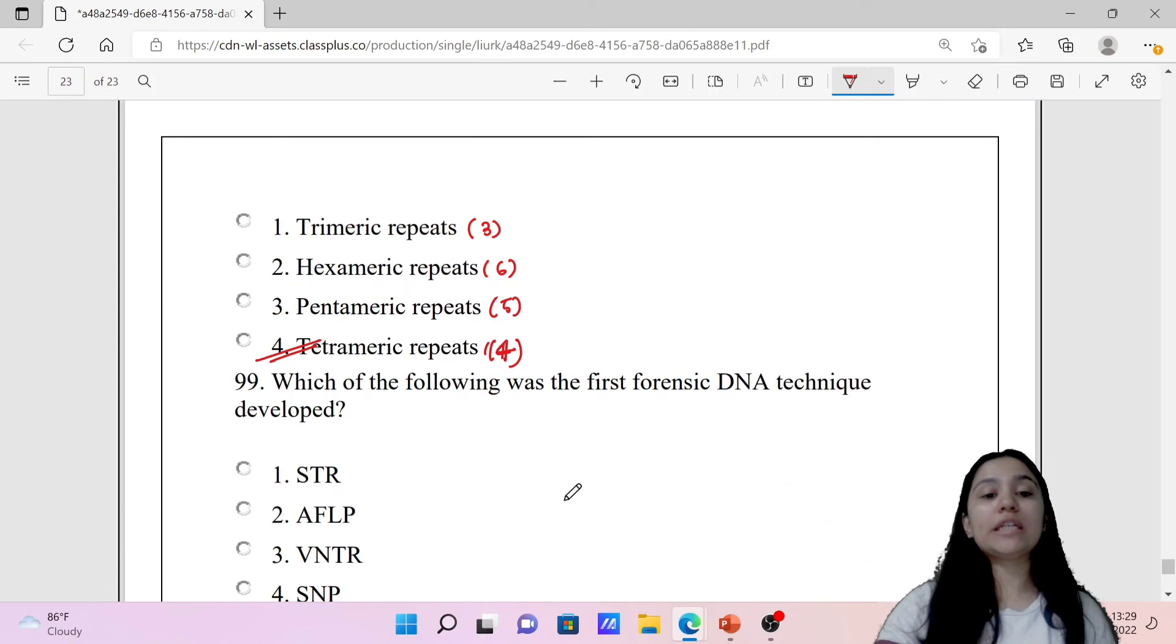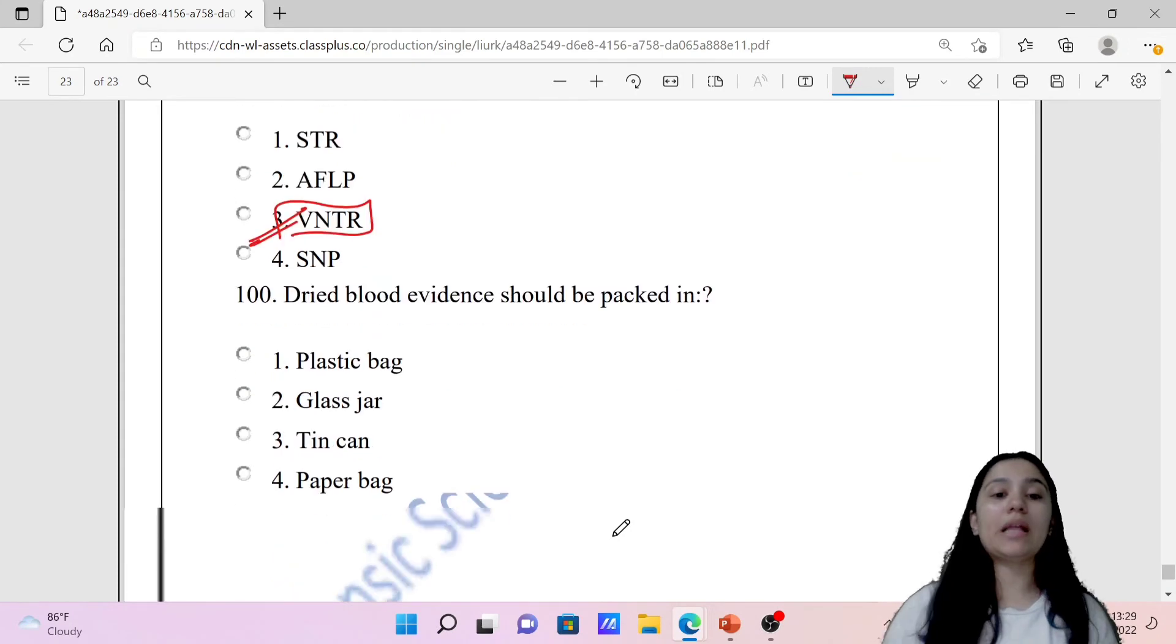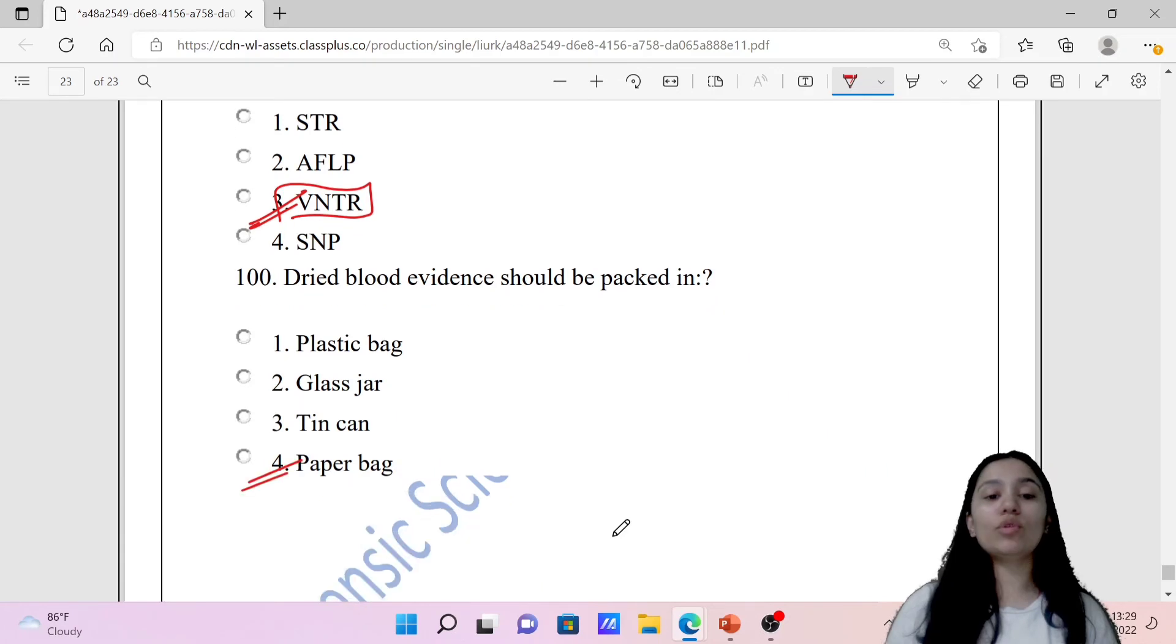Which one of the following was the first forensic DNA technique developed? The first was VNTR, which stands for variable number of tandem repeats. Next question: Dried blood evidence should be packed in plastic bag, glass jar, tin can, or paper bag. You should pack it in paper bags because they are breathable. Plastic bags, glass jars, and tin cans will cause contamination. You need breathable material so that air can pass through, keeping the evidence from the crime scene to the lab intact and uncontaminated.